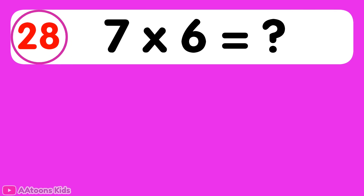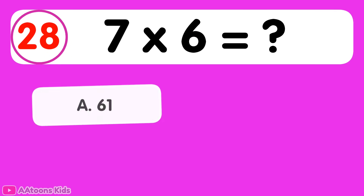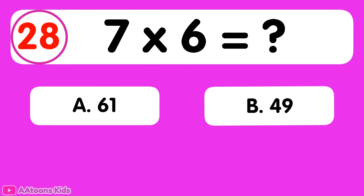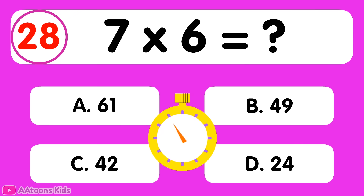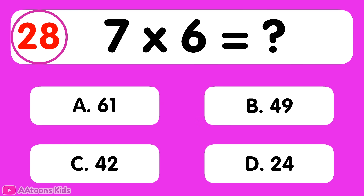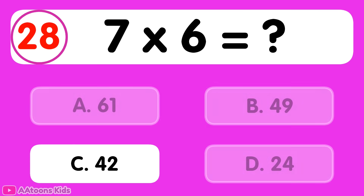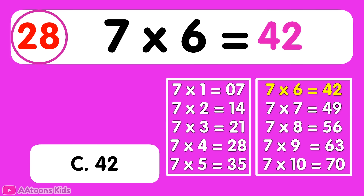7 times 6 is equal to... 42. 7 times 6 is 42.